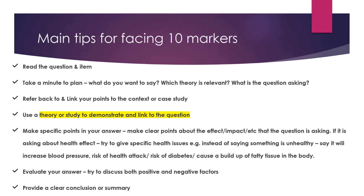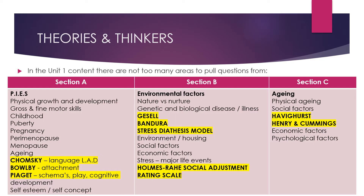Theory and studies are really important because they help boost the grade of any answer. There aren't that many theories across the exam unit course. Looking at this list here: Chomsky, Bowlby, Piaget for growth and development, or PIES. In section B you've got Gesell, Bandura, the stress-diathesis model, the Holmes-Rahe scale, and in aging you've got Havighurst, Henry, and Cumming. Depending on the issue you're asked to discuss, you'll likely use one of these thinkers to demonstrate or link to your answer.